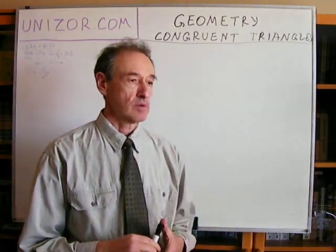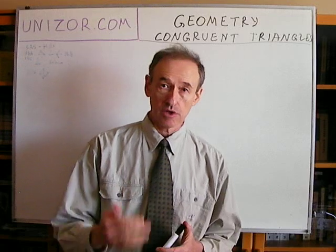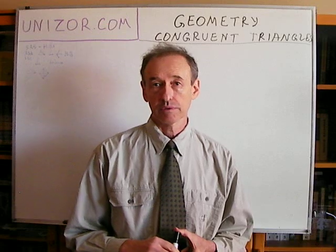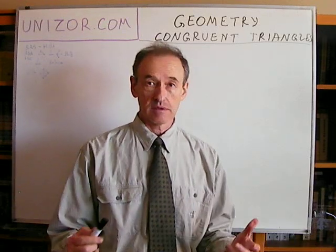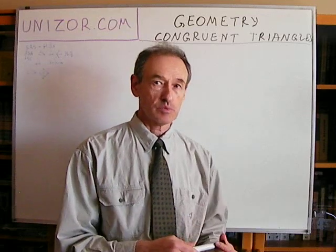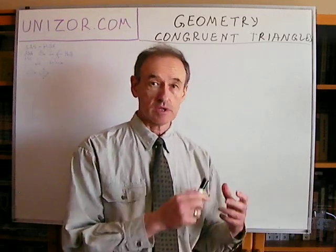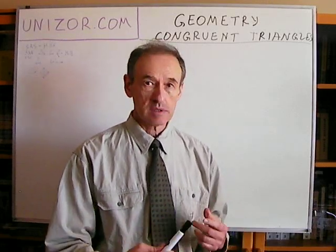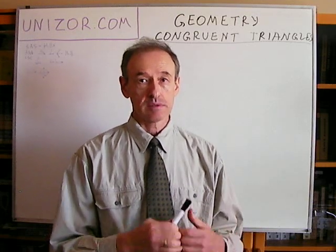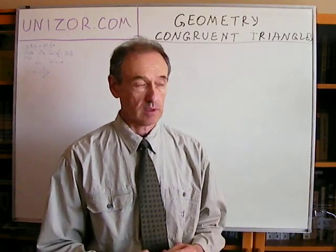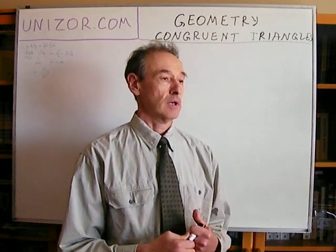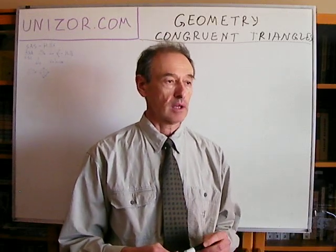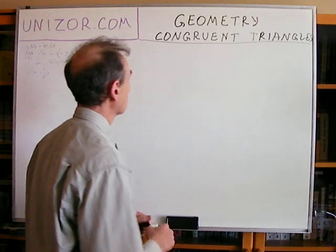These three statements specify certain conditions which are sufficient for triangles to be congruent. Congruent means everything is the same. The conditions we are talking about are not everything — just some elements of triangles are the same, and from this it is implied that everything else will be the same and triangles will be congruent. These three different statements about congruent triangles sound like this.